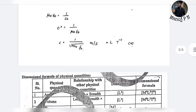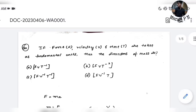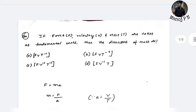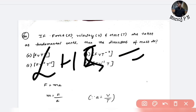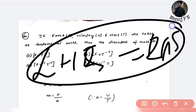Some questions require you to use dimension analysis. You can use it directly or with a twist. Let's look at the indirect method: what makes an equation dimensionally correct? The LHS part must equal the RHS. If LHS equals RHS dimensionally, the equation is valid and university-approved.